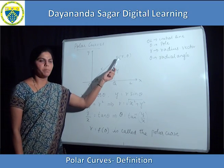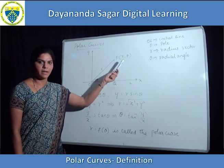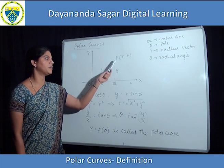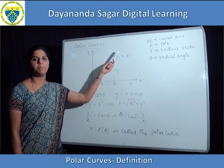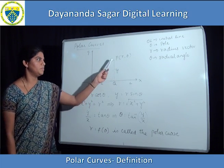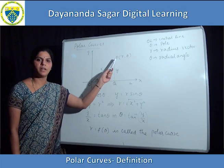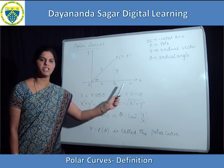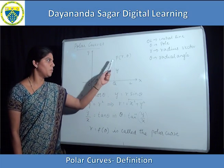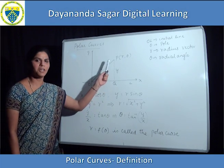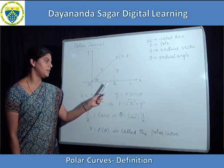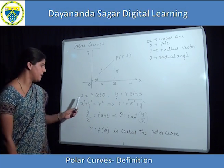The ordered pair R, theta, which are the coordinates of point P, are called as the polar coordinates. Now, drop a perpendicular from the point P onto the initial line Q. PQ is the perpendicular onto the initial line.